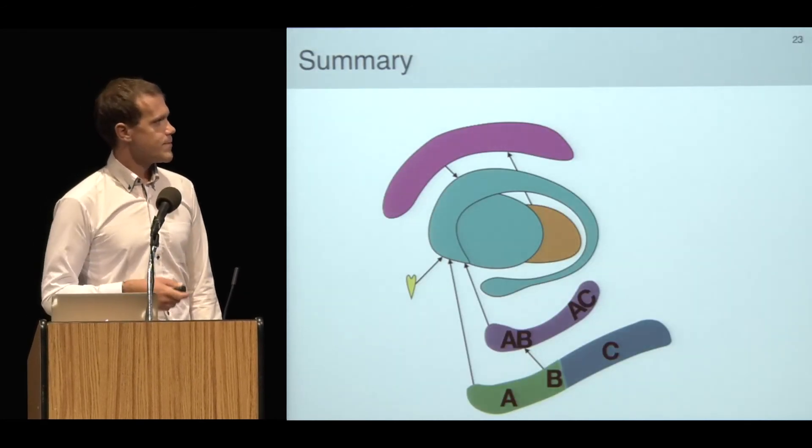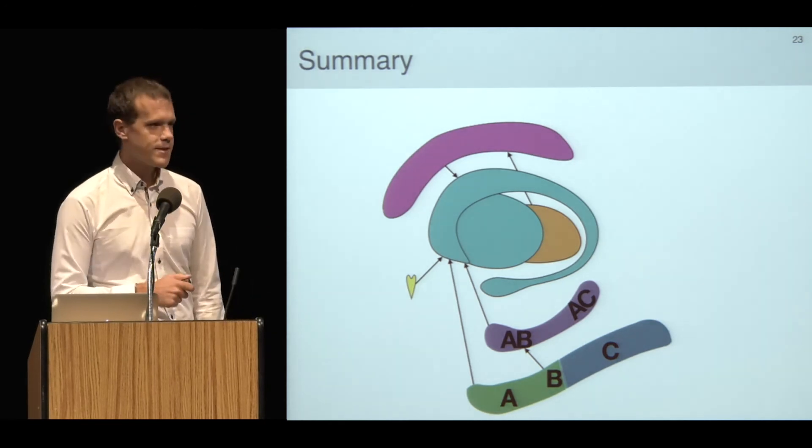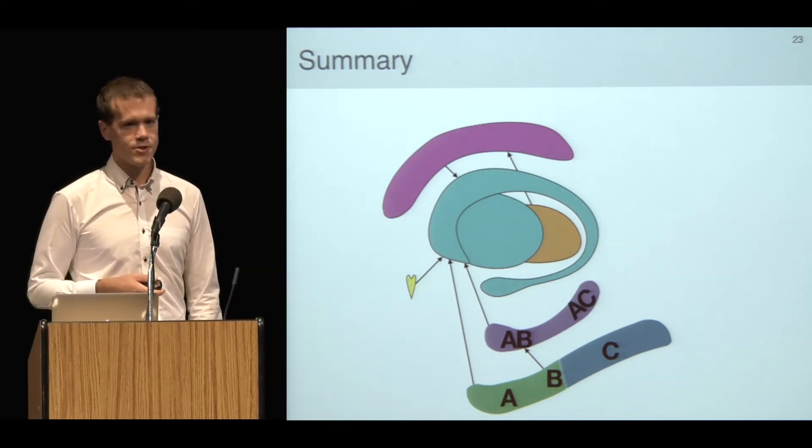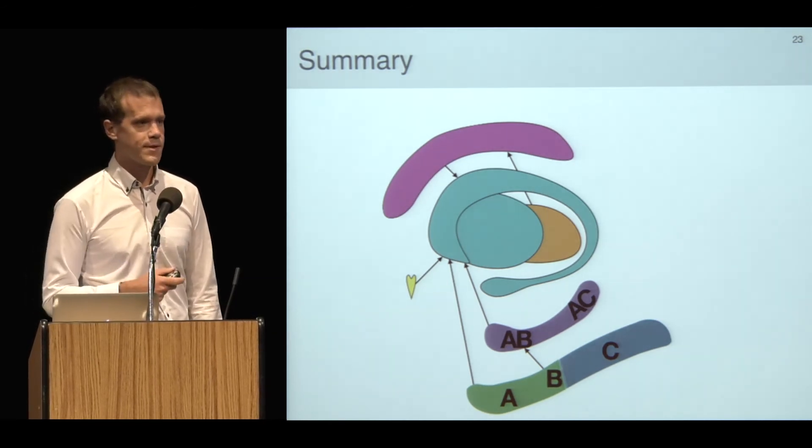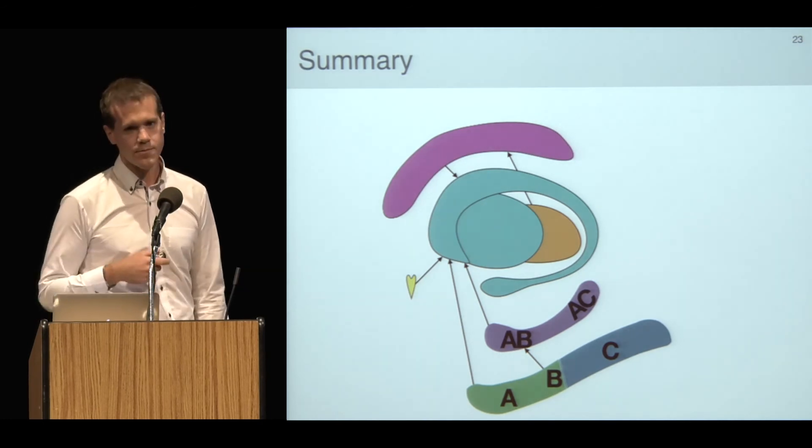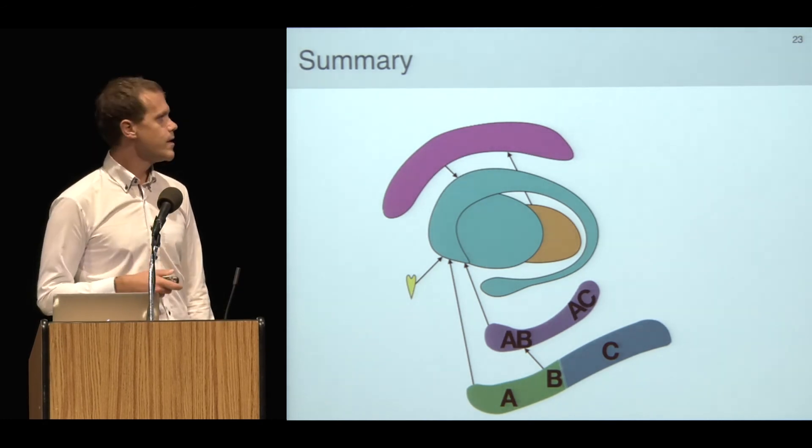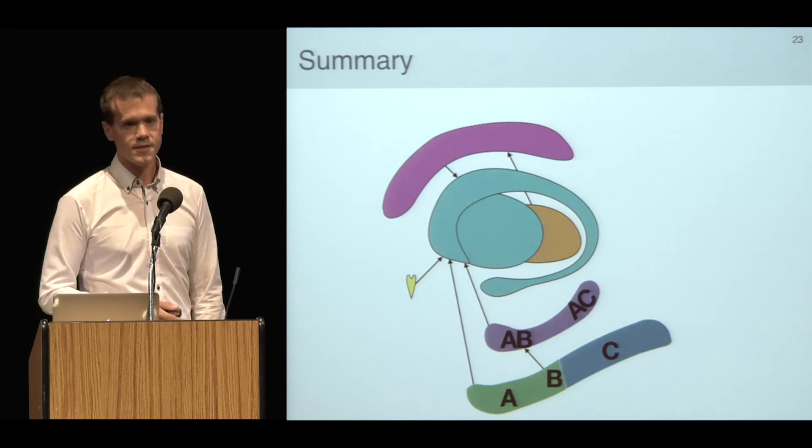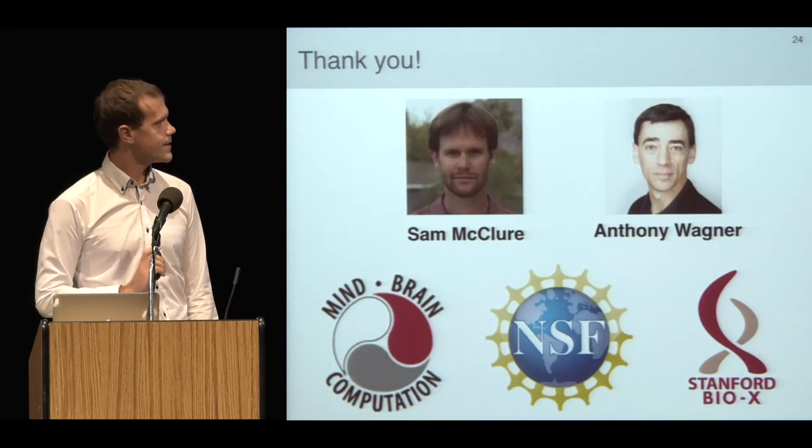Just to wrap up, I've presented a couple of pieces of evidence that are meant to establish a specific role for the hippocampus in associative learning when the problem depends on the formation of conjunctions of stimuli. Thanks.